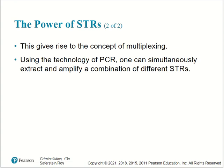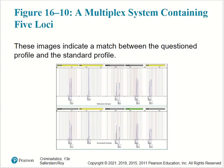The power of STRs gives rise to the concept of multiplexing. Using PCR technology, one can simultaneously extract and amplify a combination of different STRs. This figure shows a multiplex system containing 5 loci, with images indicating a match between the questioned profile and the standard profile.